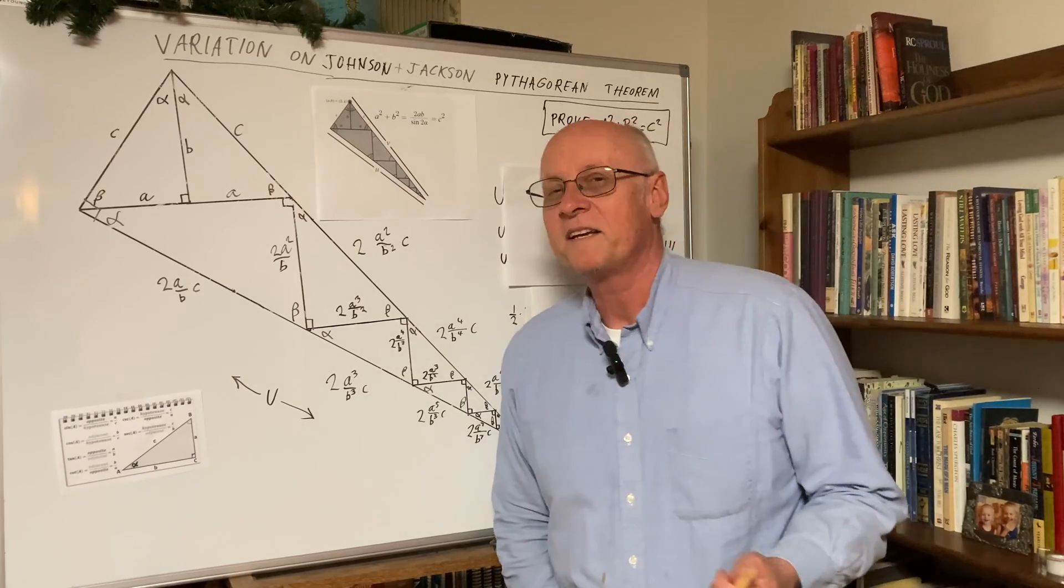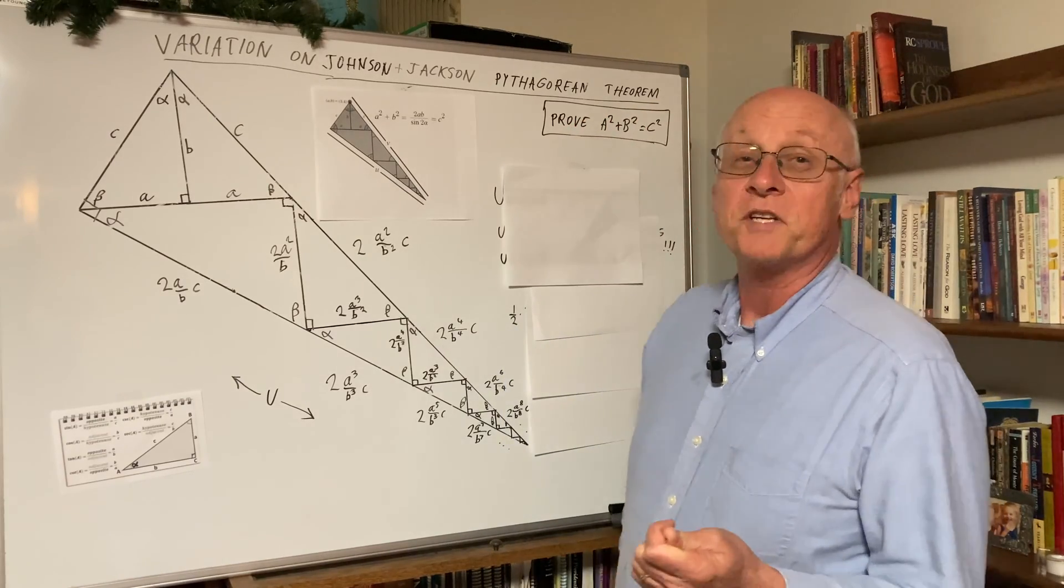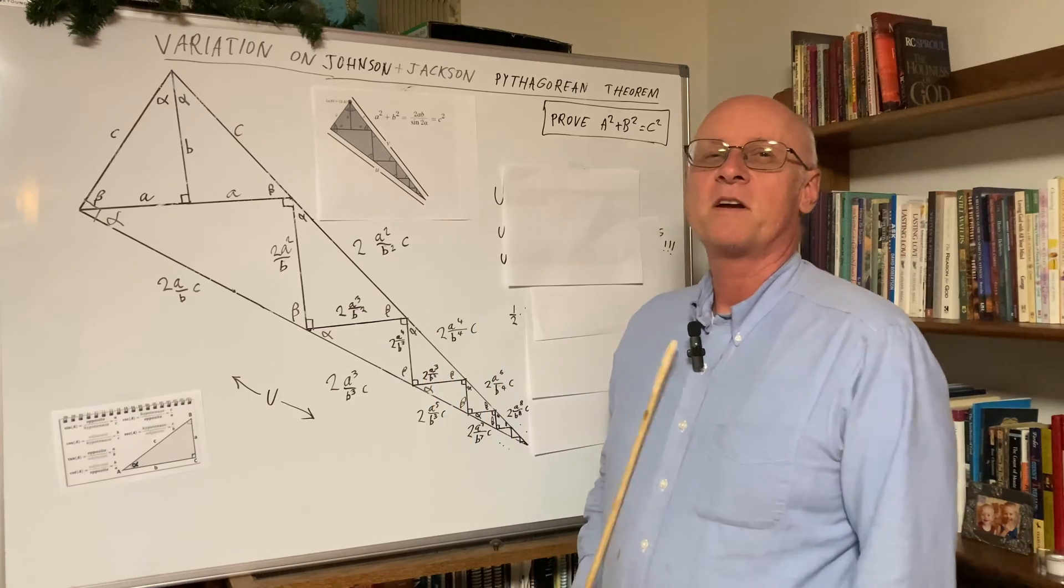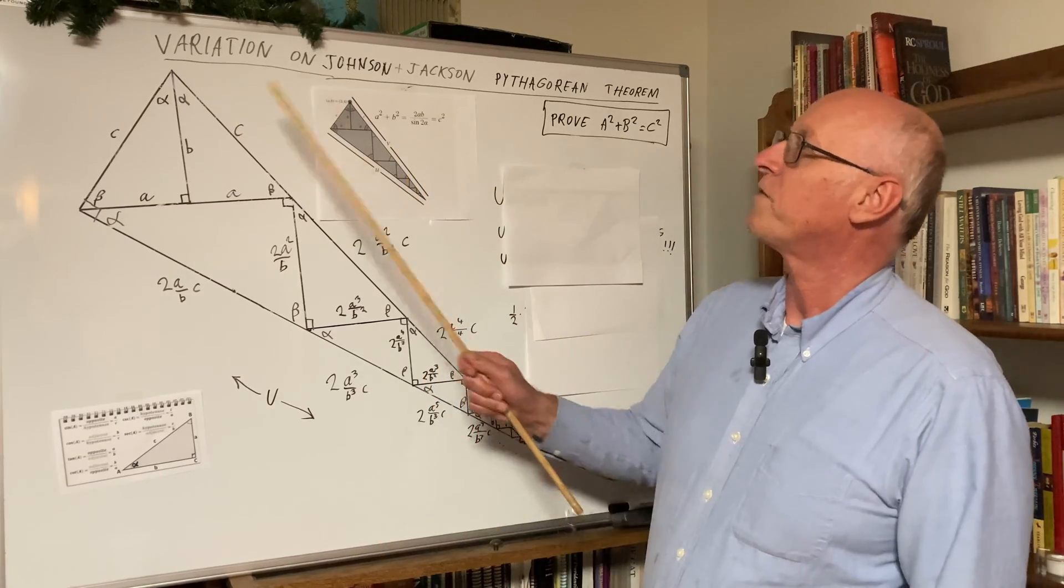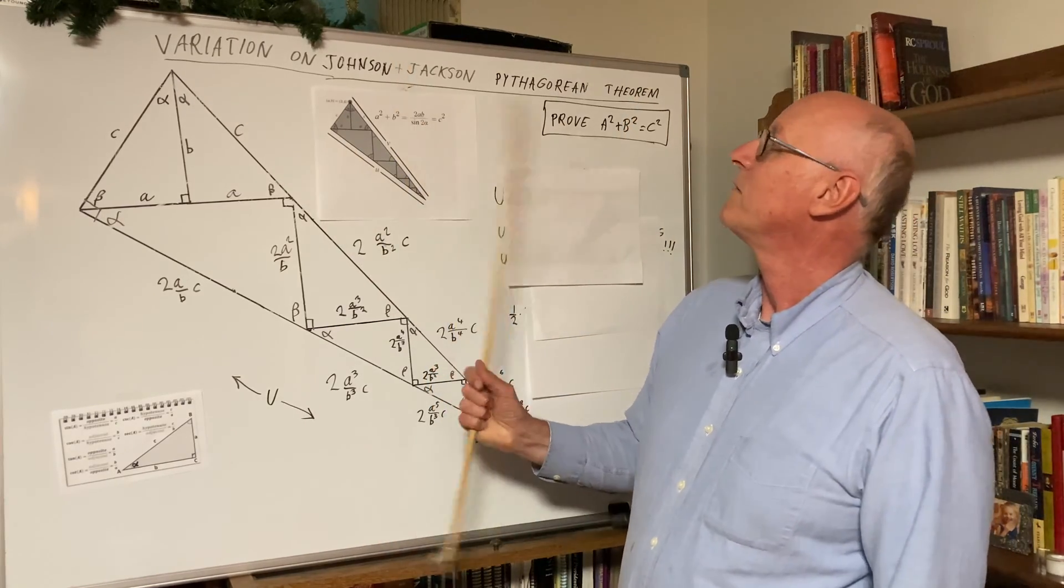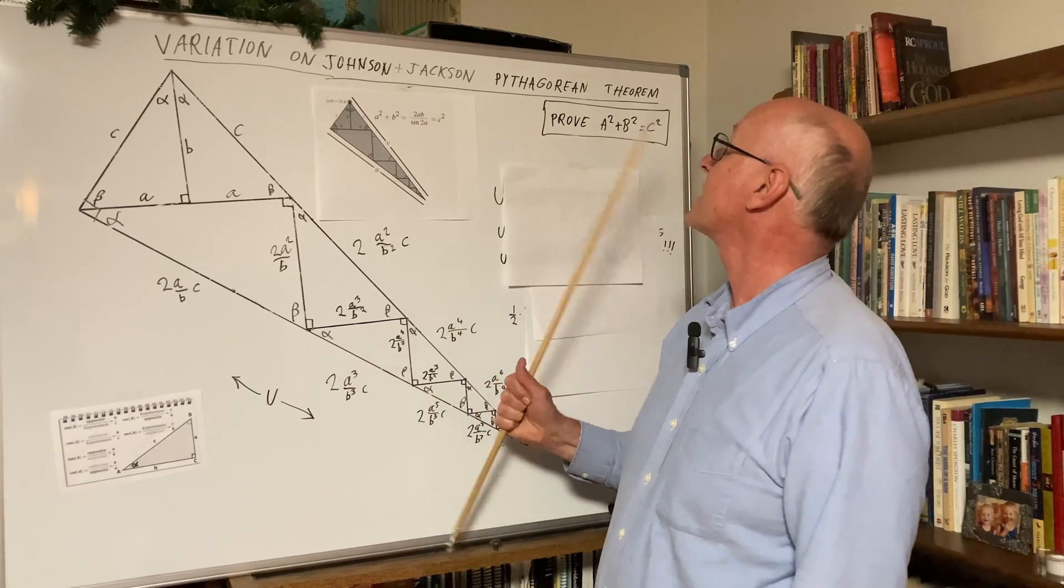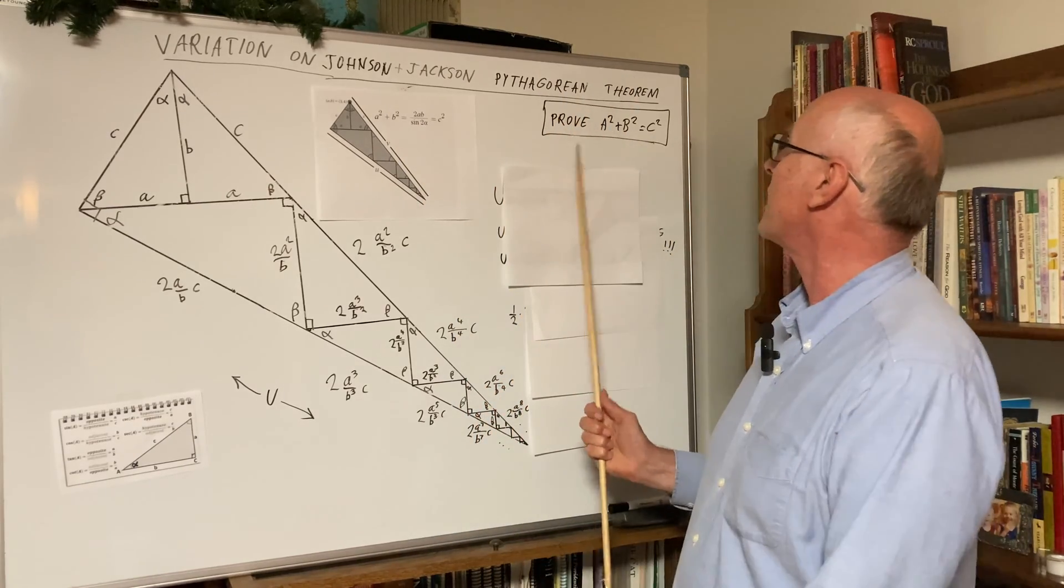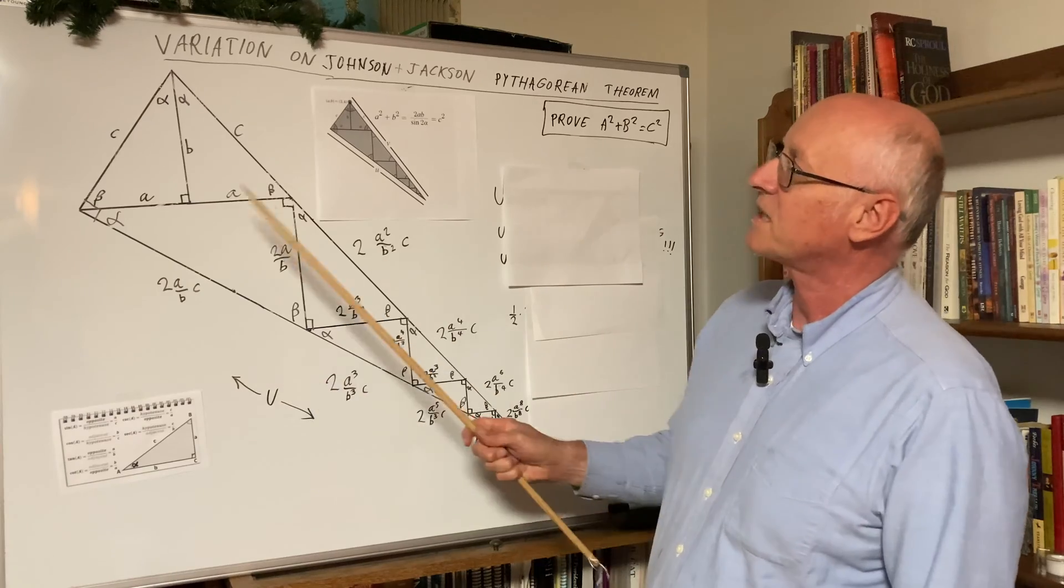Okay, welcome to my video channel. Today, I'm Marian Alena, and today we will do a variation of Johnson and Jackson's Pythagorean theorem proof that A squared plus B squared is equal to C squared.